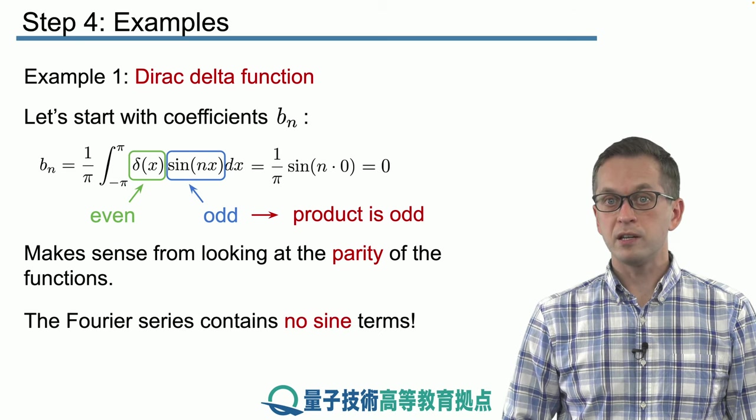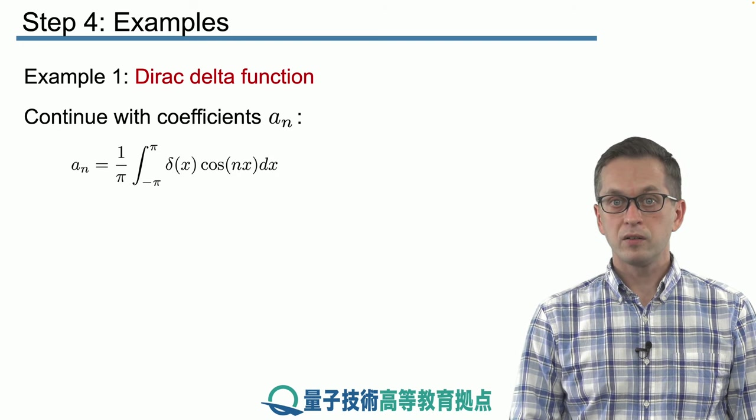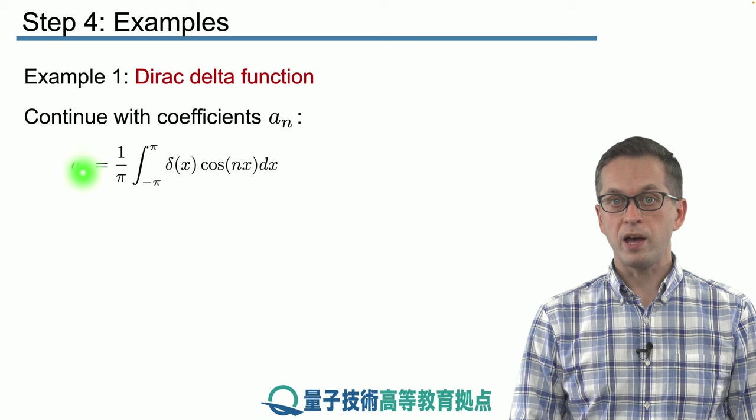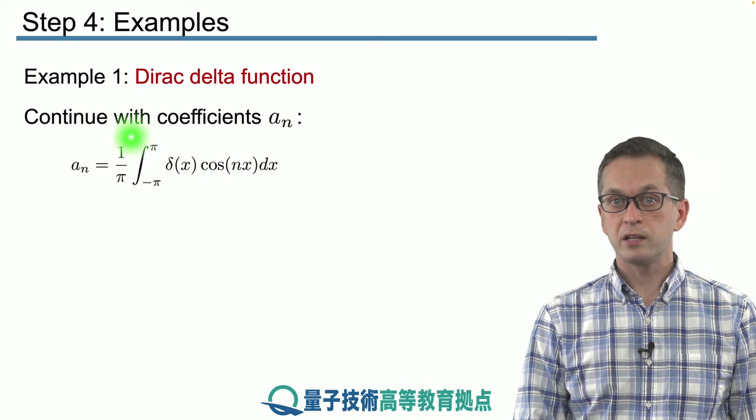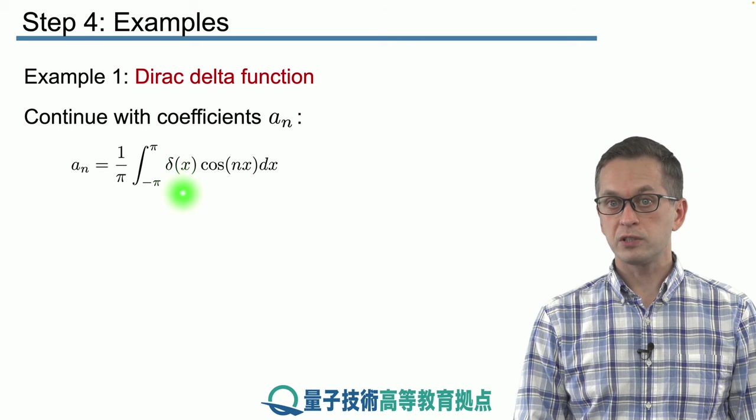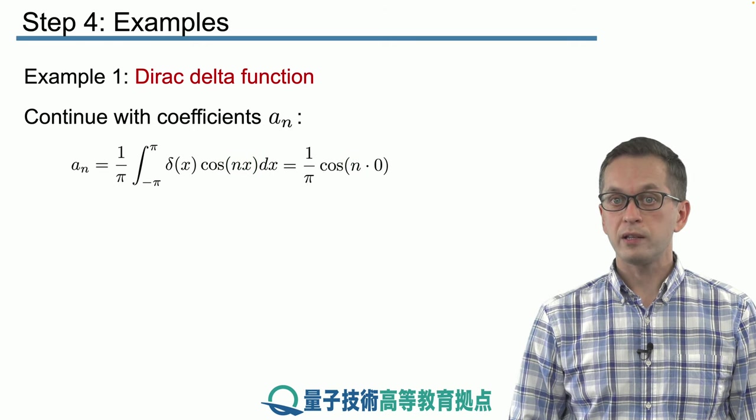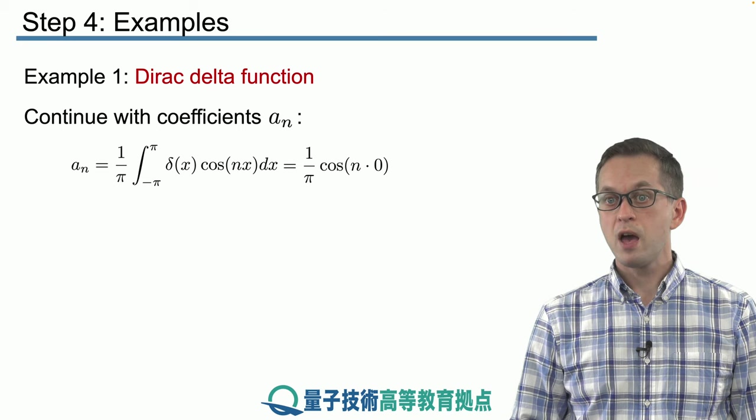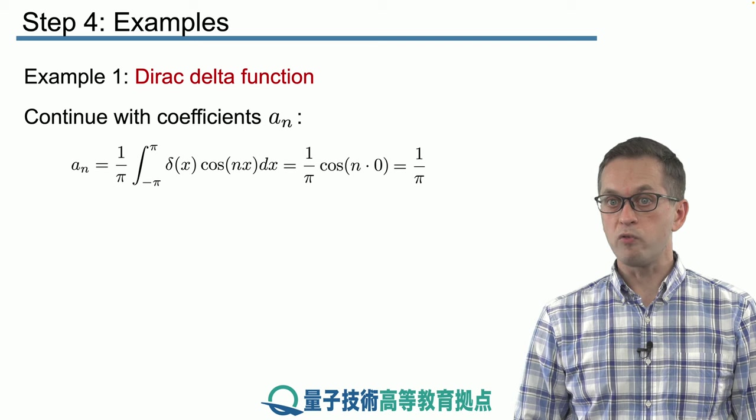Now let's look at the coefficients for the cosines, the an's. Here we use our formula again. So an is equal to the inner product of δ(x) and cos(nx) rescaled by one over π. And in this case, again, we use the property of the delta function that this entire integral basically just pulls out a zero and puts it into the cosine. So what we have is one over π times cosine of zero. And we know that cosine of zero is just one. Therefore an is equal to one over π.